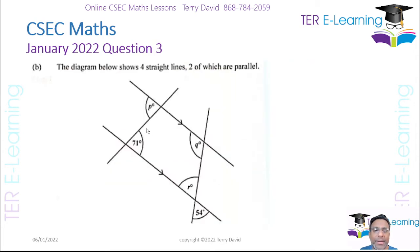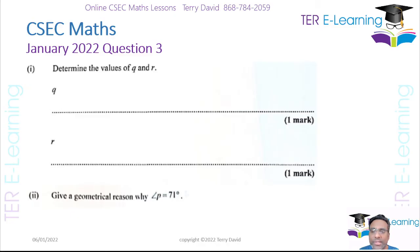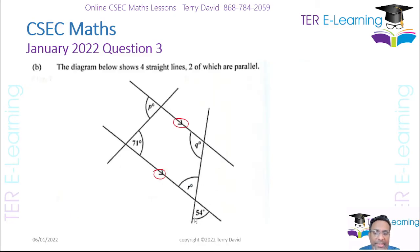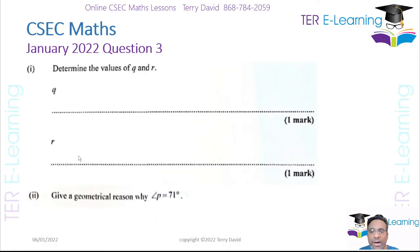Part B: we have a shape with two parallel lines — the arrows indicate which lines are parallel. We need to find angles q and r. The given angle is 54 degrees. There are two intersecting lines, so r must equal 54 degrees. R is 54 degrees because these angles are vertically opposite.